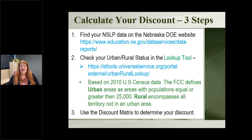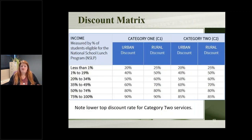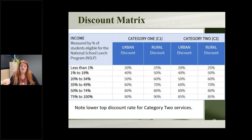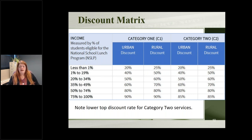You then use a matrix — a table that USAC puts out — to figure out what your discount is. Pull the percent of students eligible for the school lunch program and decide whether you're urban or rural. There are two categories of services — category one and category two — and you can see from this table that even with less than 50% of students eligible, you can still get 60 to 70% off. Here in Nebraska, most of our libraries fall between the 60, 70, and 80% discount levels. A few hit 90% and some are lower, but even 30 to 40% off is still a good deal.